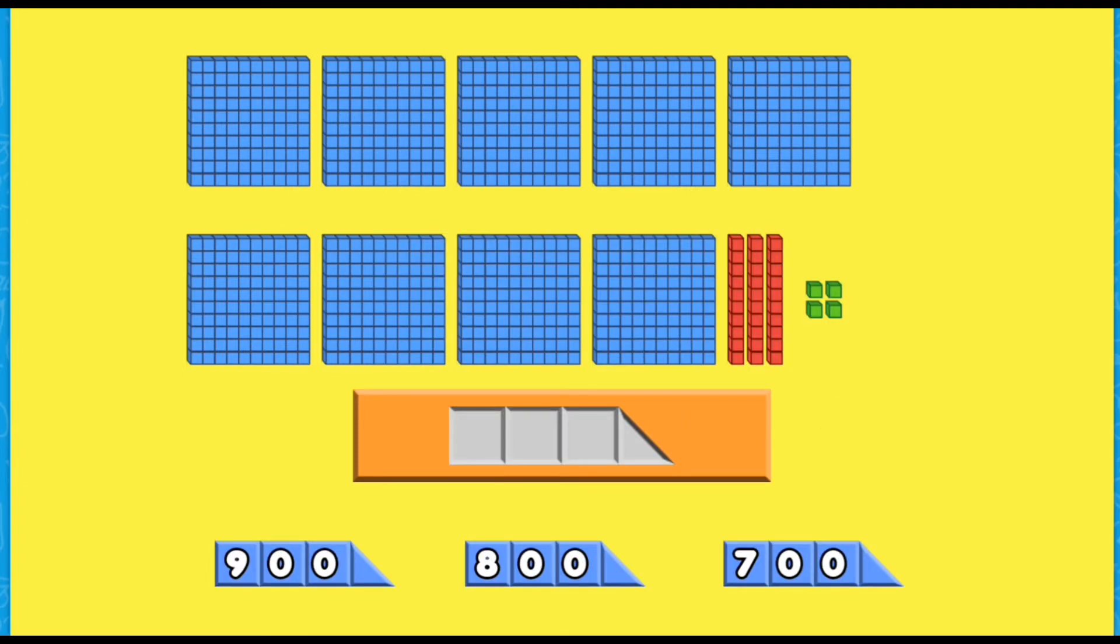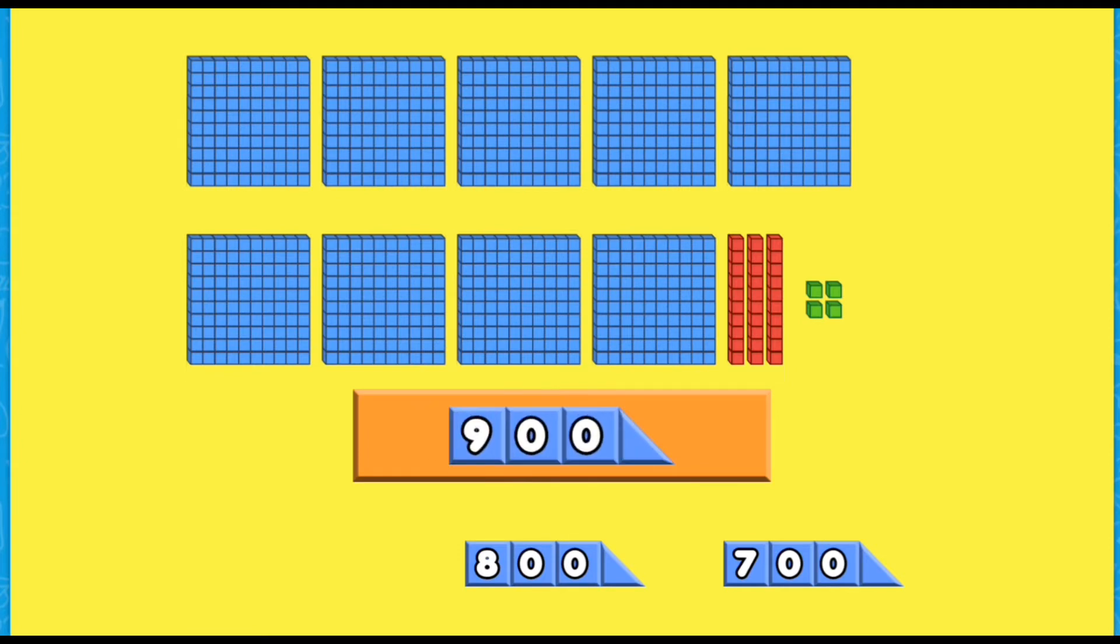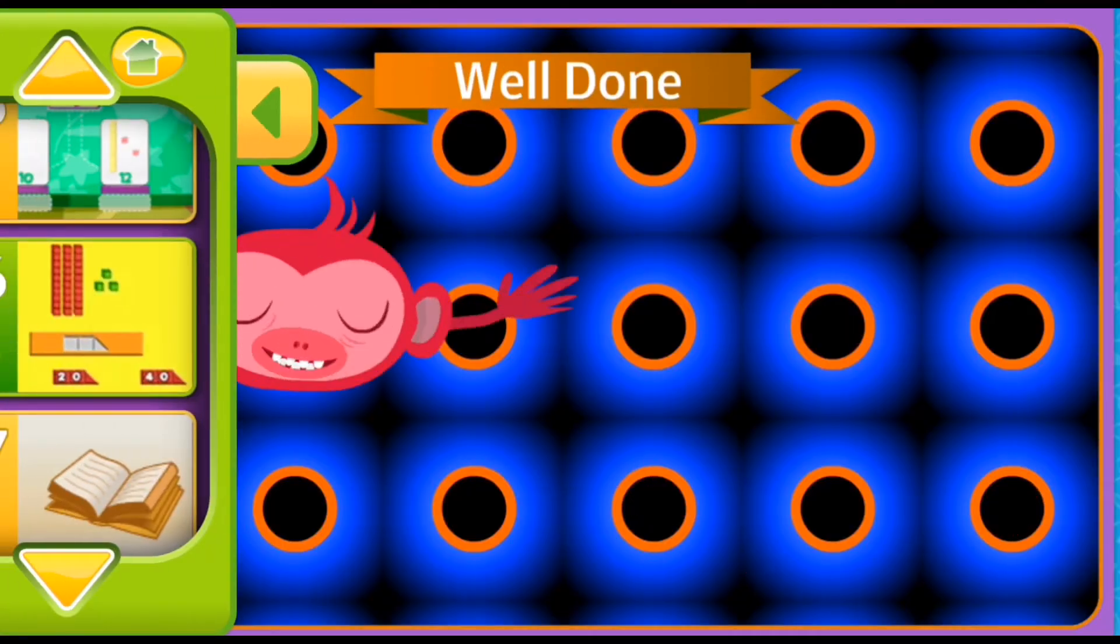How many hundreds here? One, two, three, four, five, six, seven, eight, nine. Nine hundred. Nine hundred. After nine hundred, it's one thousand. One thousand and two, one thousand and three. So how many tens here? That's one. How many tens? One, two, three. One, two, three, four. Nine hundred and thirty-four. Yay! Well done!